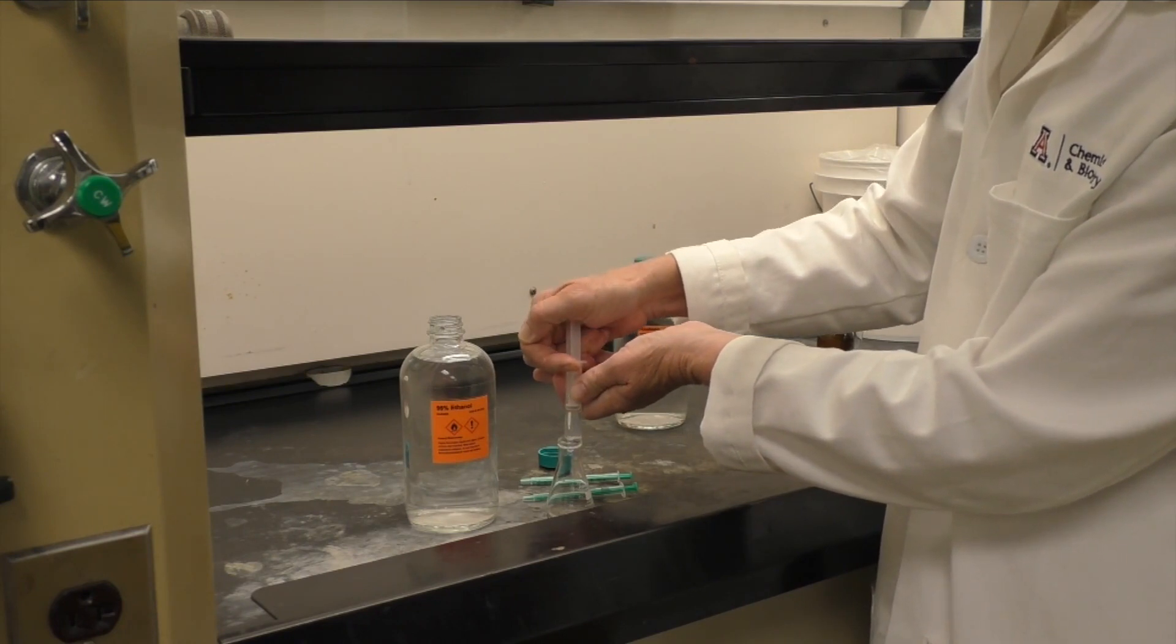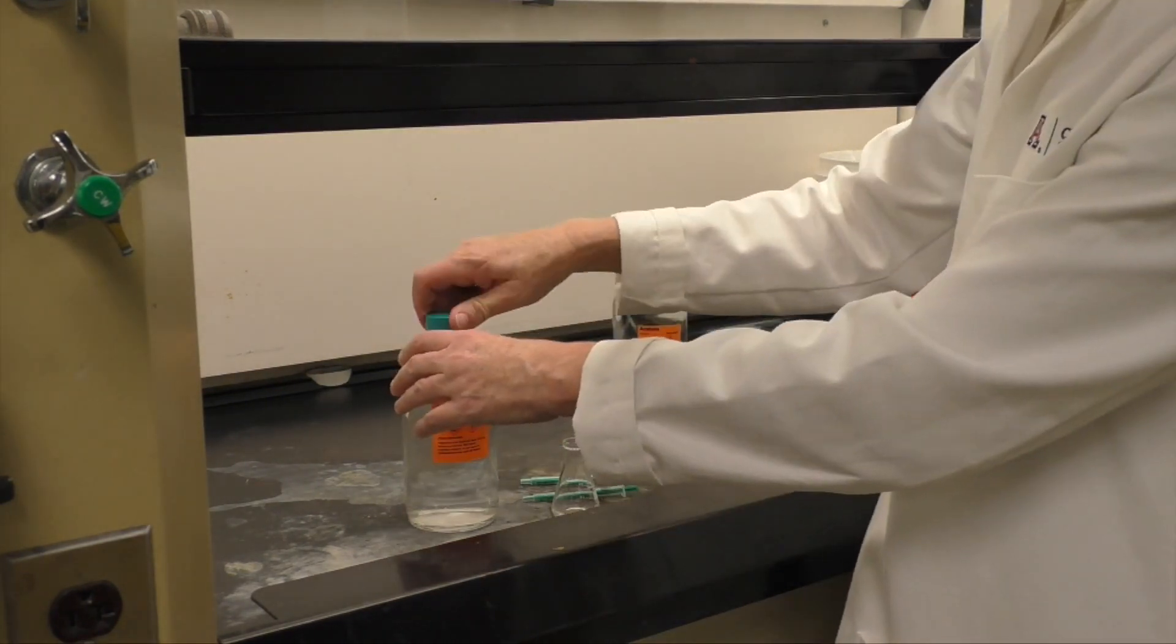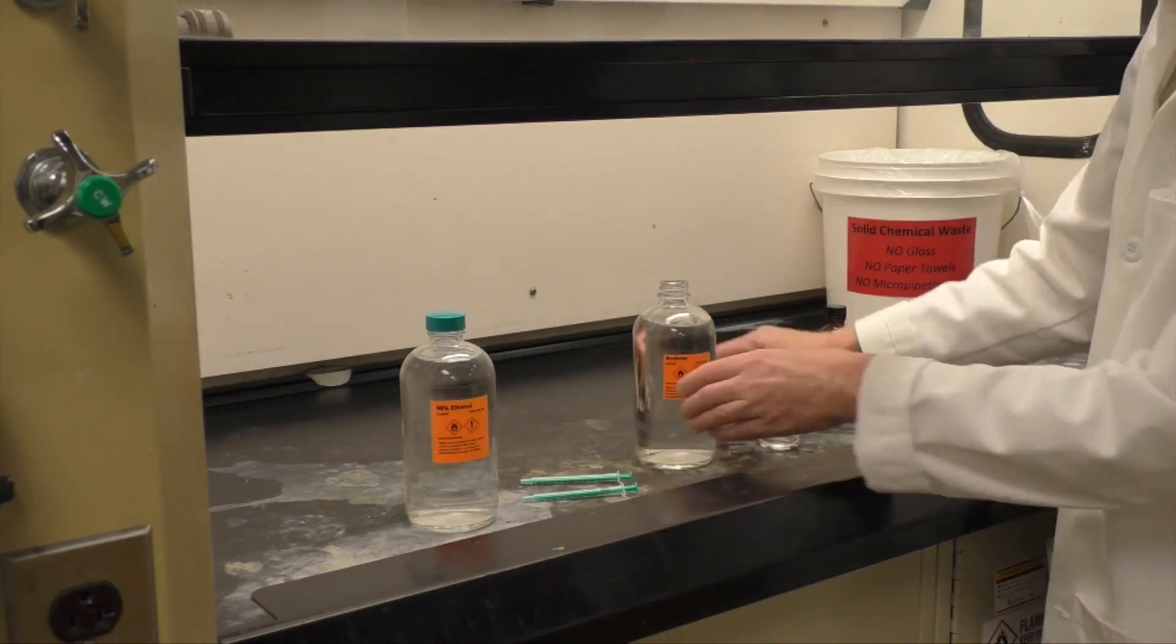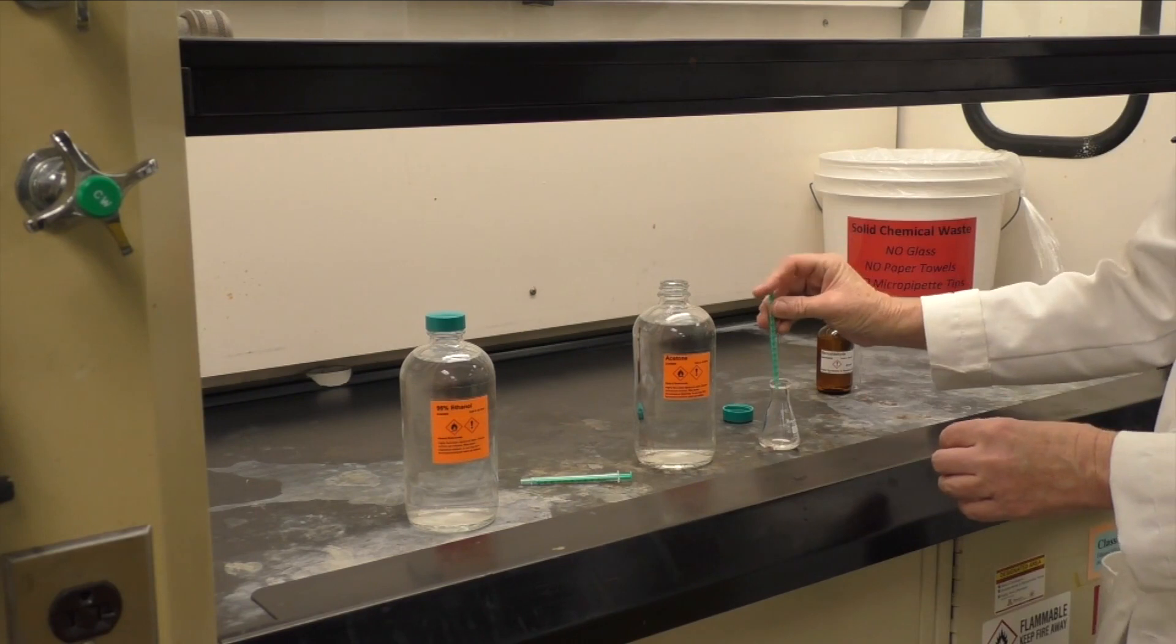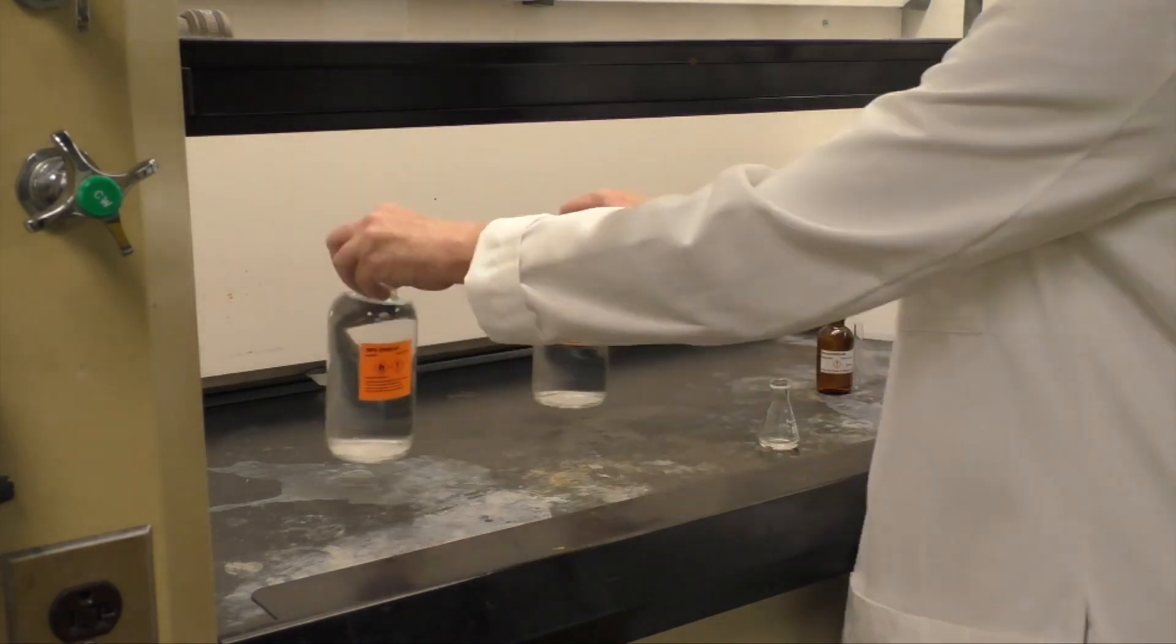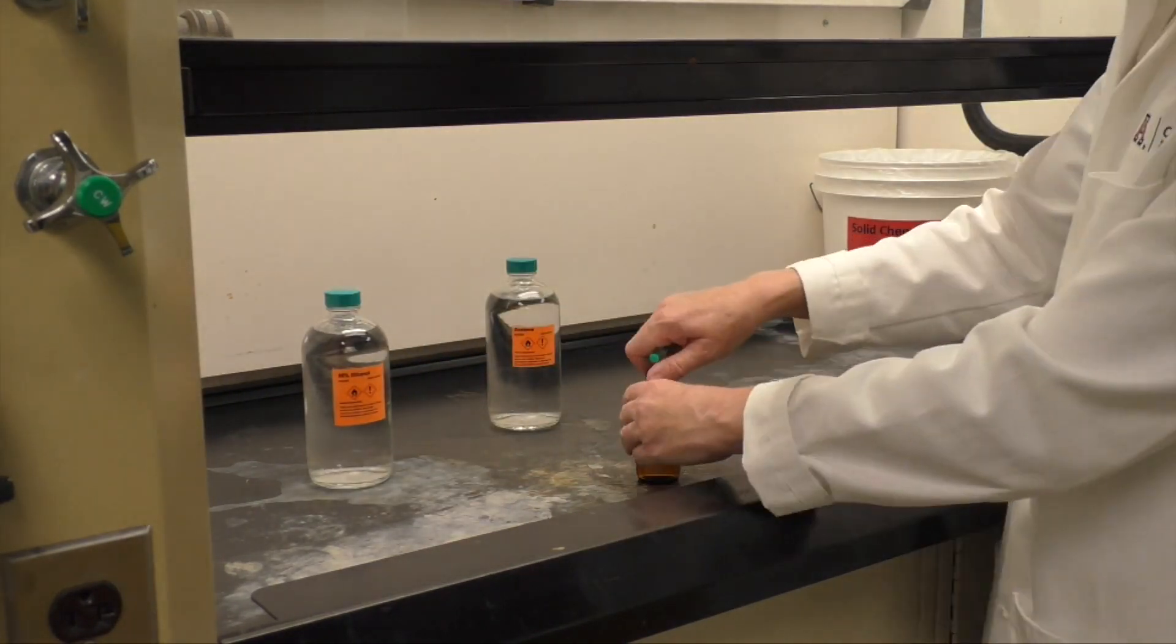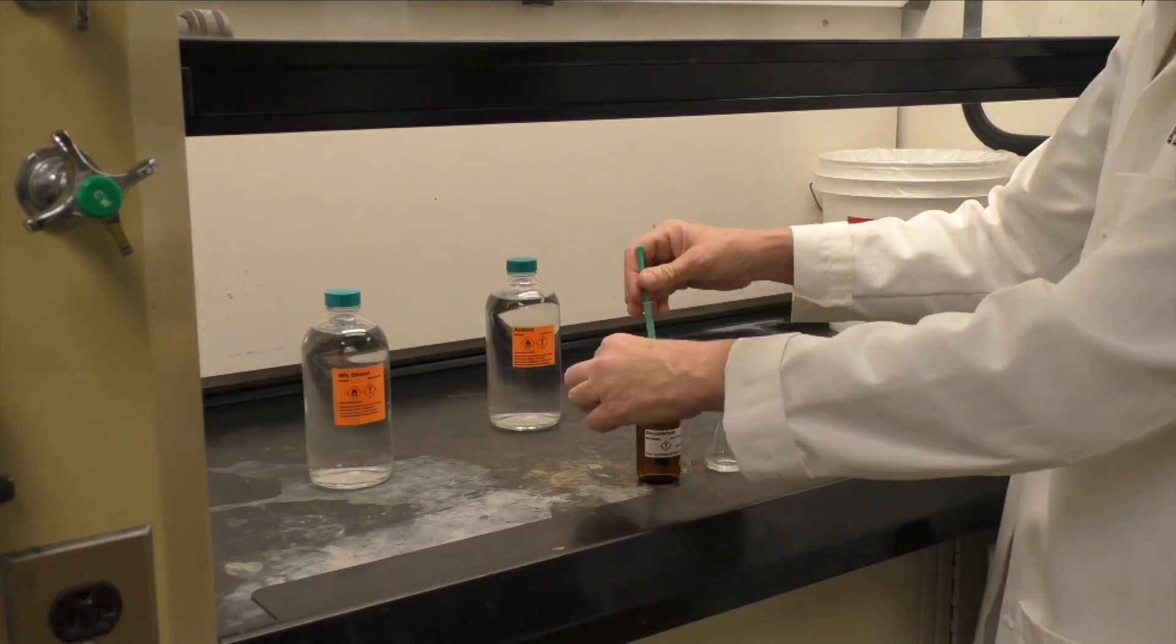Then add 0.148 milliliters of acetone. Here we're adding 0.448 milliliters of benzaldehyde. Remember that you will be adding your calculated amount of your assigned aldehyde.